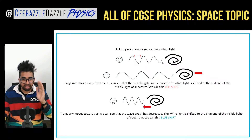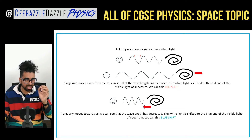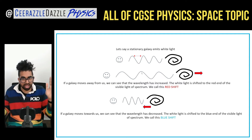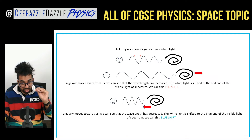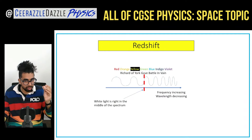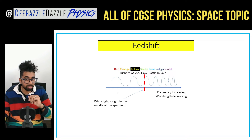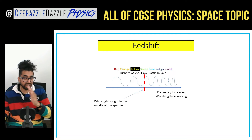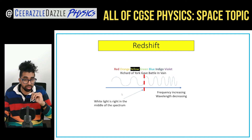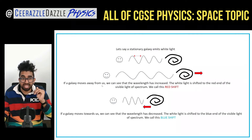Now let's talk about galaxies. Let's say a galaxy emits white light. If the galaxy is stationary, it emits white light as normal. But if the galaxy is moving away, from the Doppler effect the wavelength will increase — the waves get stretched out and the frequency drops. Because the white light has increased in wavelength, it shifts to the red end of the spectrum. Hence why we call it red shift. If a galaxy is moving away from us, the wavelength increases and the white light is shifted to the red end of the visible light spectrum — this is called red shift.